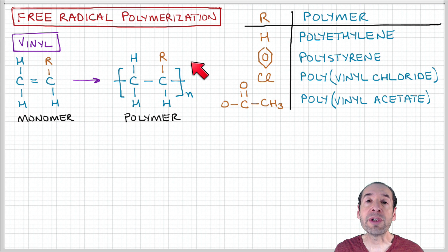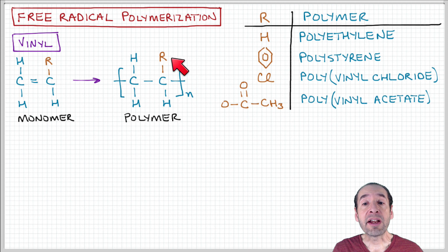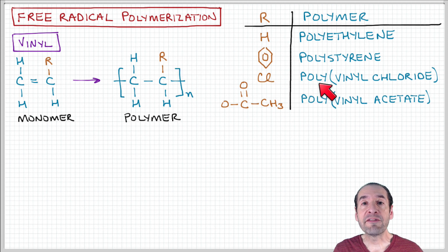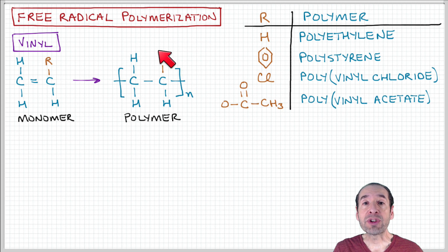If the R group is another hydrogen, that's polyethylene. If it's a carbon ring, we have polystyrene. If it's a chlorine group, we have polyvinyl chloride, or PVC. And if we have an acetate group, we have what's called polyvinyl acetate.